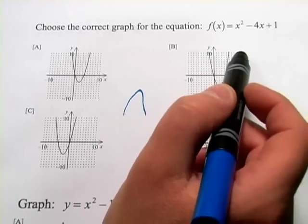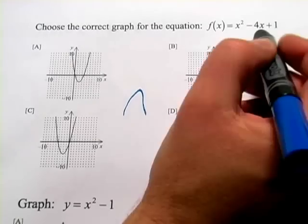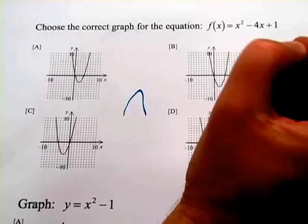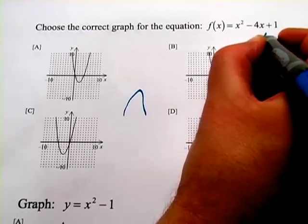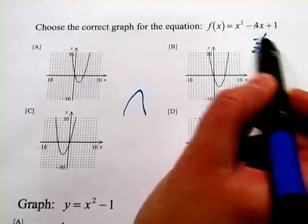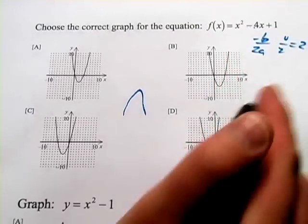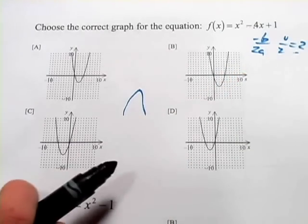The next shortcut that I would suggest is finding the vertex. In this case, the vertex formula is going to be negative B over 2A. So in this case, it's going to be negative negative 4 over 2. So that's 4 over 2, or just 2. So that's the X-coordinate of the vertex.